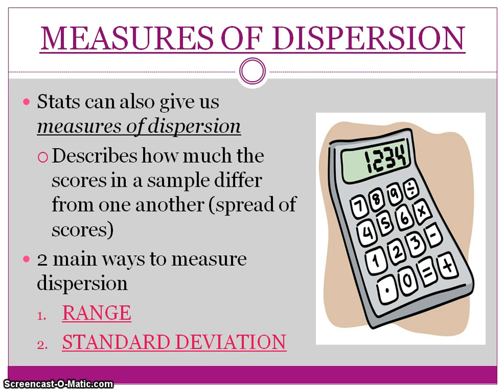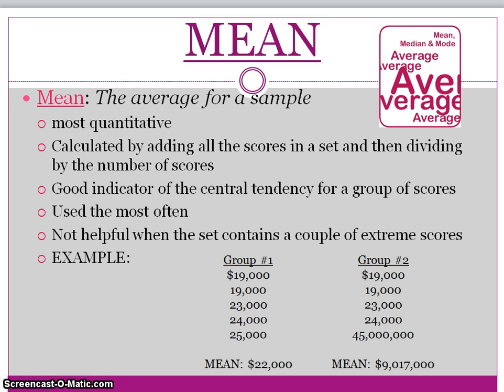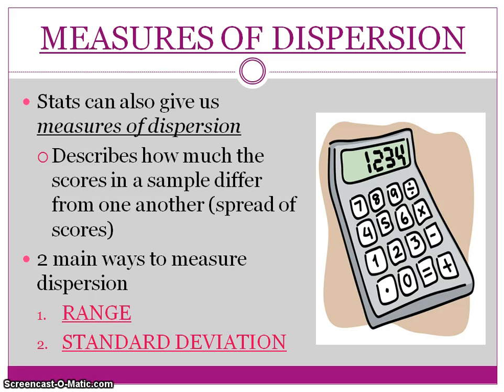Moving back to descriptive statistics, we move on to the second type, which is measure of dispersion. Measure of dispersion describes how much a sample differs from other scores in the set. There are two measures of dispersion: range and standard deviation.